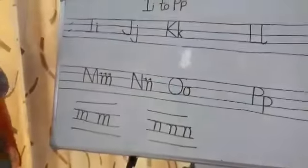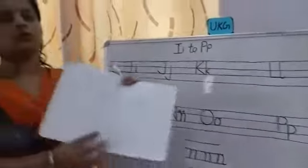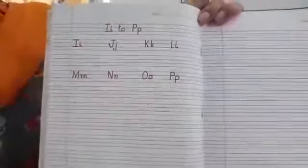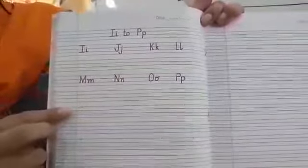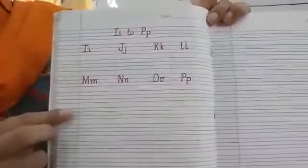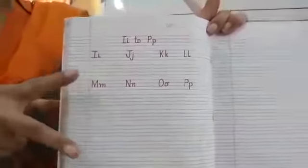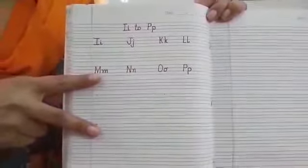Now you all will take your English notebook — four lines notebook — and write it like this in your notebook with the help of your mama. Practice it two times on one page. Okay, bye bye!